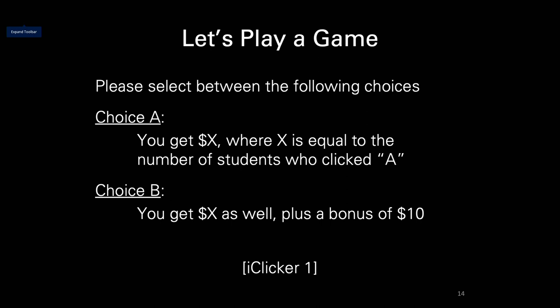Before getting into types of environmental and social dilemmas, we're going to play a game involving an iClicker response. Without discussing with your neighbors, please use your iClicker to select between the following two options. There are only two choices — A or B. In choice A, you get X dollars, where X equals the number of other students in the room who clicked A. In choice B, you get X dollars plus a bonus of $10.